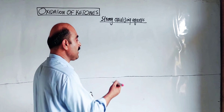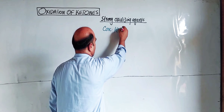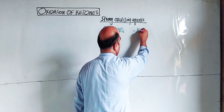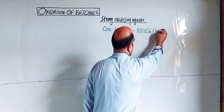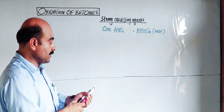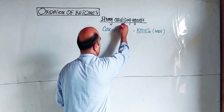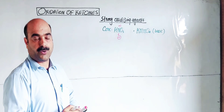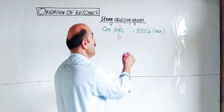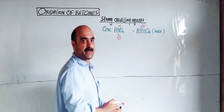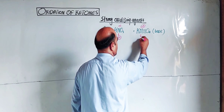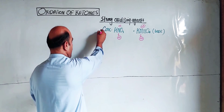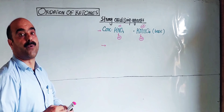The strong oxidizing agents used are: first, concentrated HNO3; second, basic KMnO4. KMnO4 has an oxidation state of plus seven, which is a very stable high oxidation state, making it easy to gain electrons and act as a strong oxidizing agent. KMnO4 is reduced to KNO2, and KNO2 is a strong oxidizing agent.